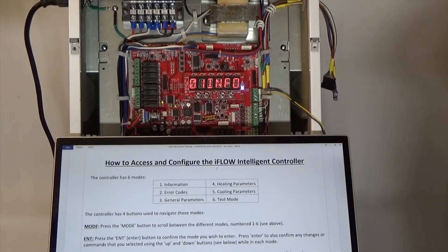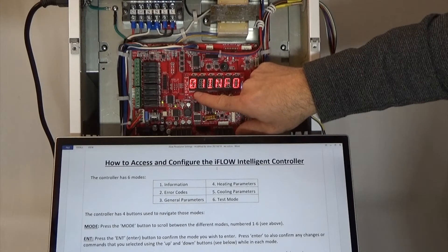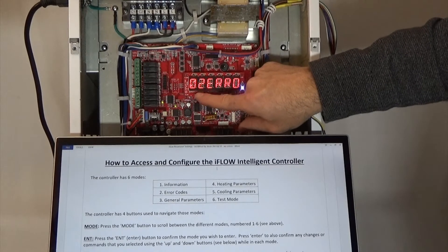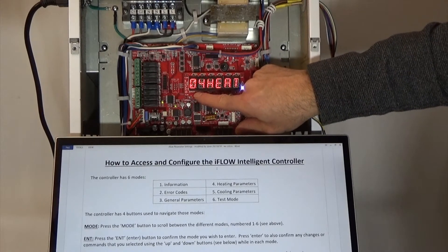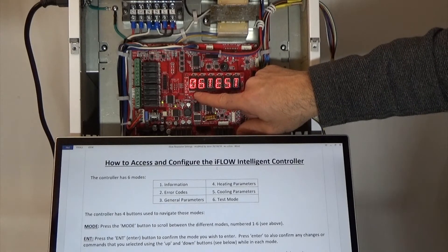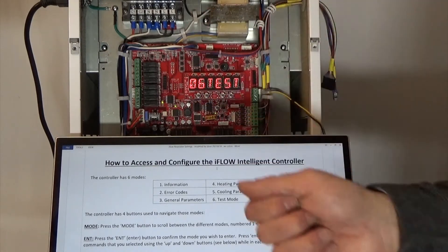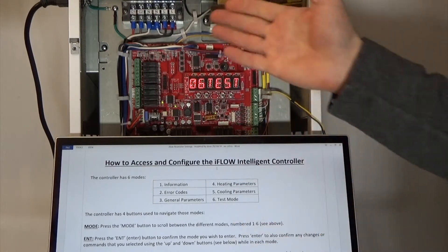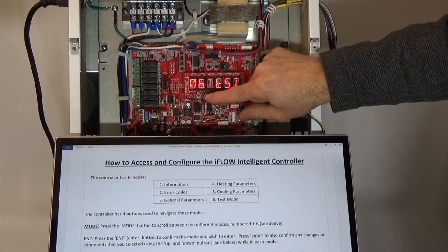Mode one is information mode. By pressing the mode button on the very left, you can scroll through the different modes. Mode two is for error codes — that will give you the last ten error codes. Mode three is for general parameter settings, mode four for heating settings, mode five is for cooling settings, and mode six is for testing. That will test the different components on the unit: you can test the blower speed, the pump speed, and any of the relays you've got connected. You would do that through test mode.